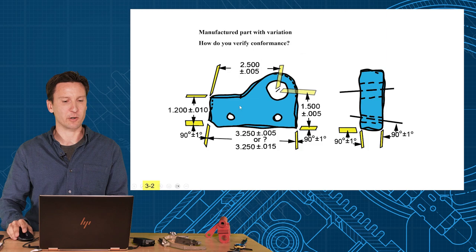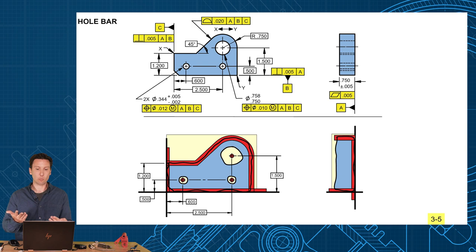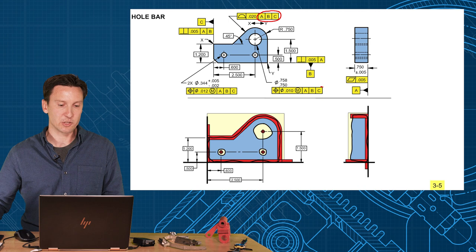You create a datum reference frame. You look at how it mounts. You're going to select an A, a B, and a C datum feature. That creates a coordinate system that you relate all of your features to that coordinate system. We use our two big symbols, profile to that datum reference frame and position to that datum reference frame to control the form, orientation, location of features on your part.